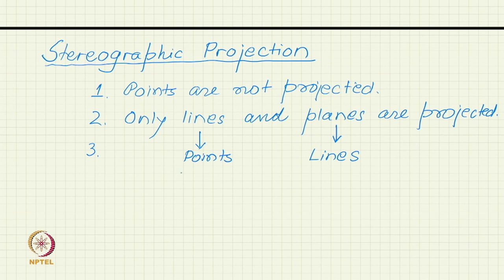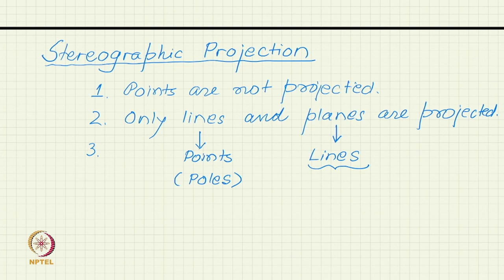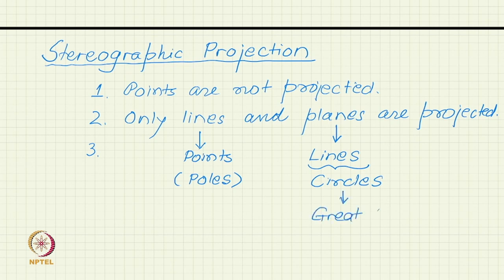These points, in the language of projection, are sometimes called poles. The planes which become lines are very special lines - they are not arbitrary straight lines, but actually they are always circles. Lines project as circles and these circles are known as great circles. Those are the characteristics of stereographic projection.